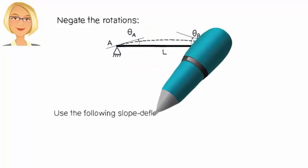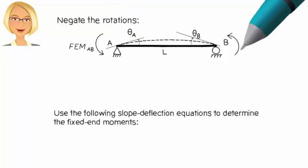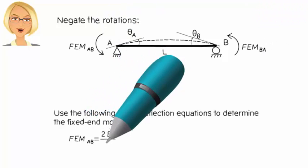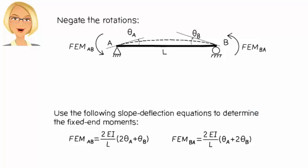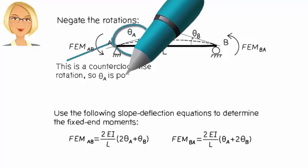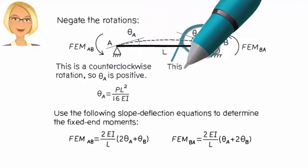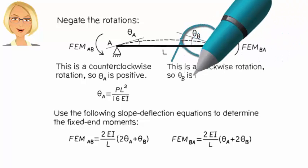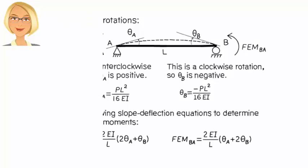Now, plug the rotation values in the load-free slope-deflection equations in order to determine the fixed-end moments. Recall that these equations use our adopted sign convention according to which counter-clockwise is considered positive. This means theta A is positive, PL squared over 16 EI. And theta B is negative PL squared over 16 EI. Then, we get...